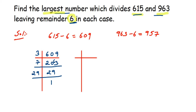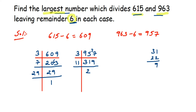Now for 957: it goes into the 3-times table, so 3 times 3 is 9, 3 times 1 is 3 with remainder 2, giving us 27, and 3 times 9 is 27. That leaves 319. It doesn't go into the 7 or 5 table, so we try 11: 11 times 2 is 22, subtract from 31 gives remainder 9, bring it down to make 99, and 11 times 9 is 99.